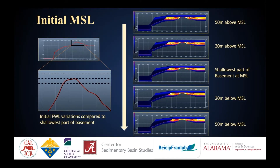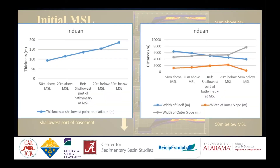We know that at the end of the Permian there was a regional transgression and drowning of the platform, but we cannot pinpoint the exact depth of the basement with respect to mean sea level. The uncertainty with respect to the initial position of mean sea level is equally important. On the x-axis I have the different range of initial mean sea levels tested, and on the y-axis I have the geometry. The results indicate that with change in initial mean sea level, there is a substantial change in the width of the shelf and slope, but not so much in the thickness on top of the platform.